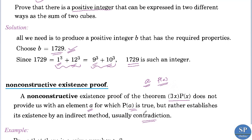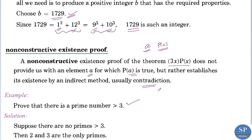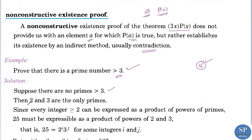It can be illustrated by an example. Prove that there is a prime number greater than 3. Using a constructive proof, we simply note that 5 is a prime number greater than 3. But to prove this by the non-constructive existence proof method, we use contradiction. Suppose there are no primes greater than 3 — that means all primes are less than or equal to 3, so the only primes are 2 and 3 by our assumption.